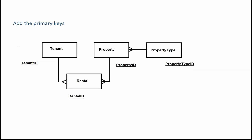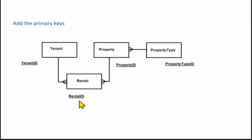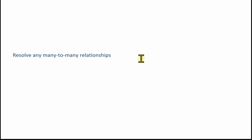The next thing we need to do is add the primary keys. This is quite straightforward: property type ID is the primary key for property type, property ID is the primary key for property, rental ID is the primary key for rental, and tenant ID is the primary key for tenant. The next thing we would normally do is resolve any many-to-many relationships, but there are none in this database.